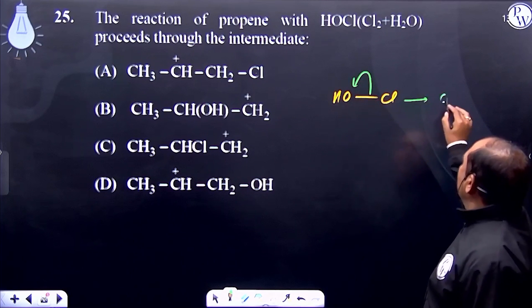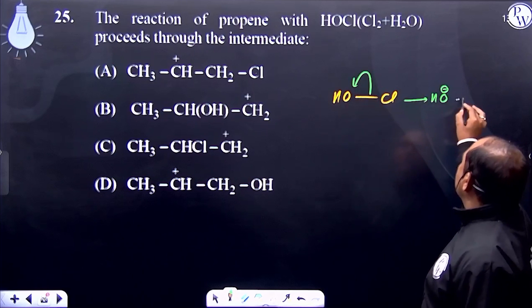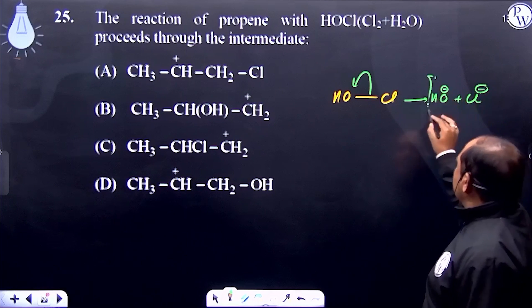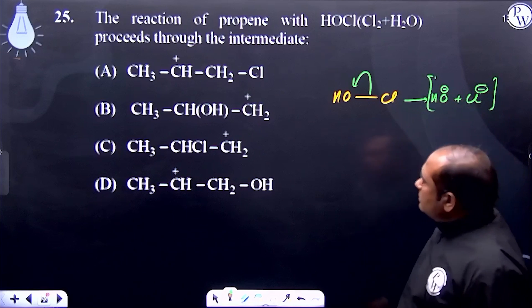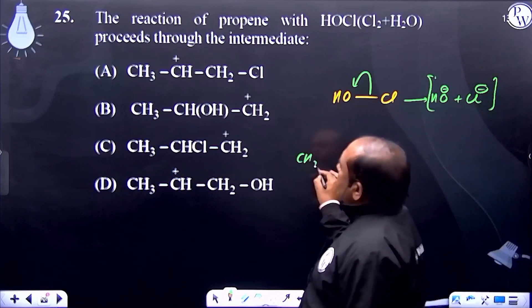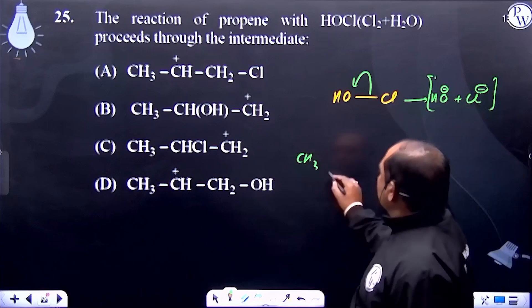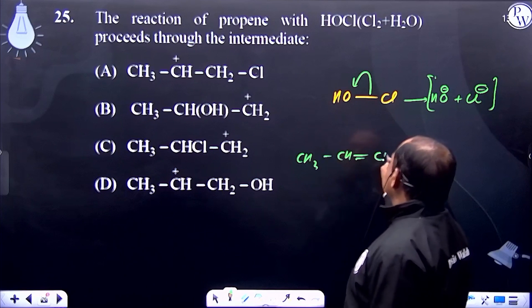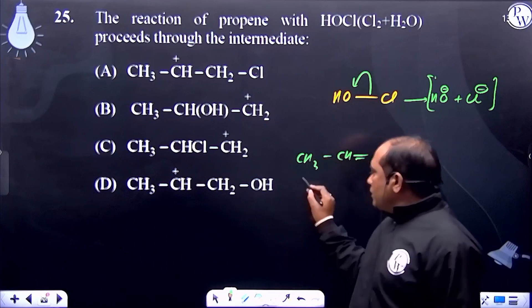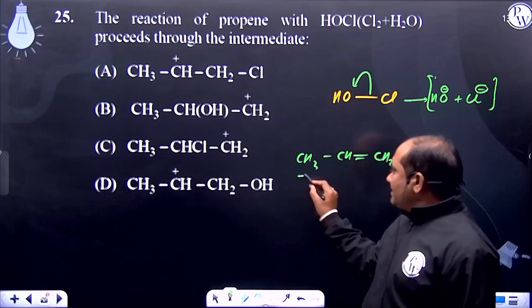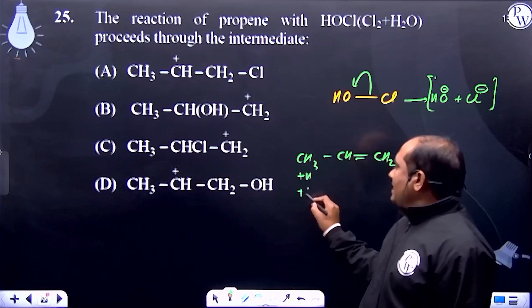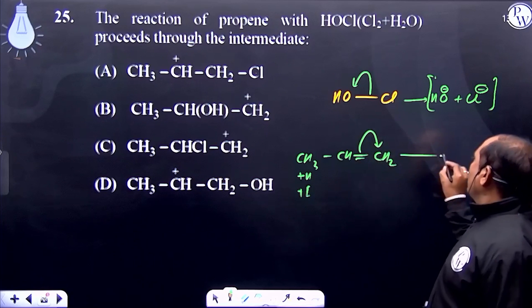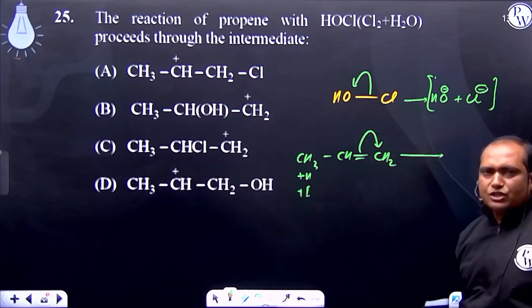The bond dissociation gives OH⁻ and Cl⁺ as the reacting species. When we take propene (CH₂=CH-CH₃), due to hyperconjugation, the +H effect, and the +I effect, the bond is polarized and electrophilic addition reaction takes place.